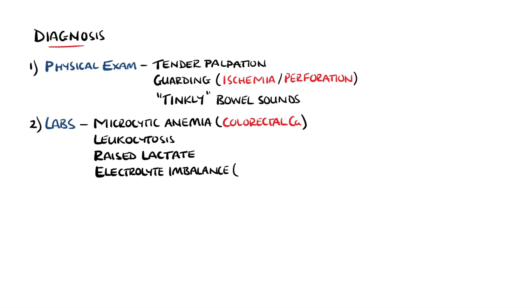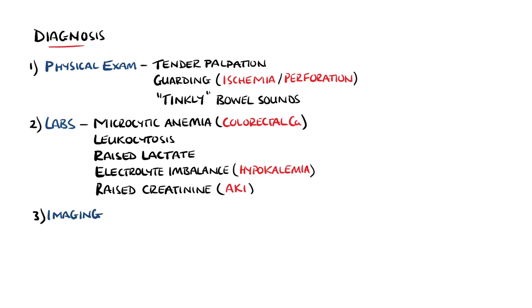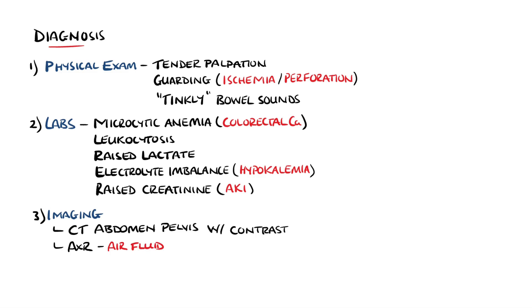We may also see electrolyte imbalances with hypokalemia being frequent, and a high creatinine may indicate an acute kidney injury, which is a common complication due to the vomiting and dehydration. The preferred imaging modality is a CT scan of the abdomen and pelvis with contrast, especially as it can help in preoperative planning. Another imaging modality is an abdominal X-ray, where you may see dilated gas-filled loops or air-fluid levels, which can indicate obstruction. In some instances, it is possible to determine if a small or large bowel obstruction is present based on the bands on the bowels.